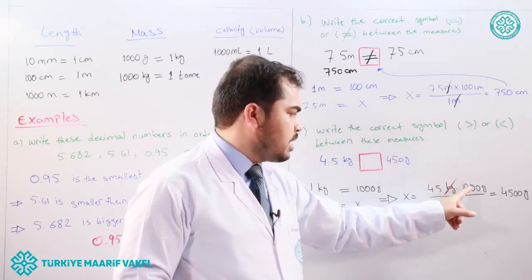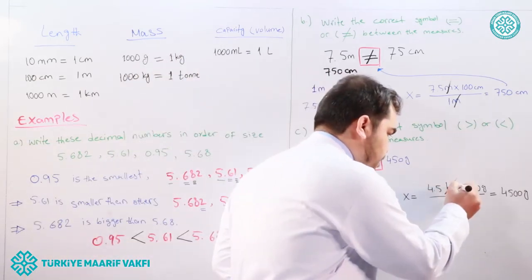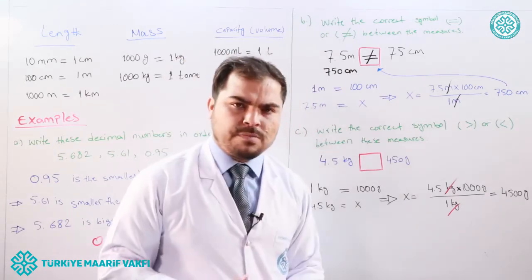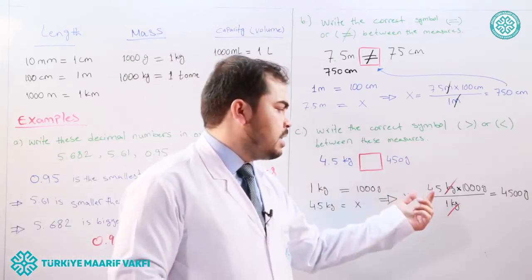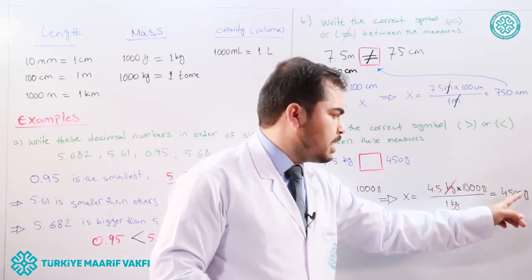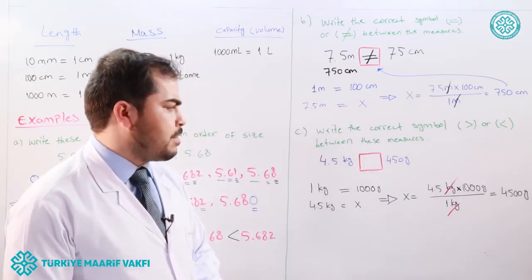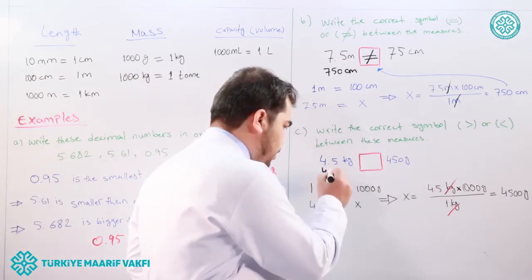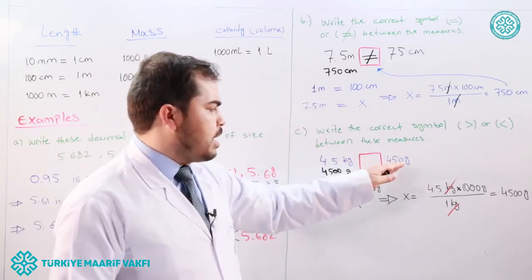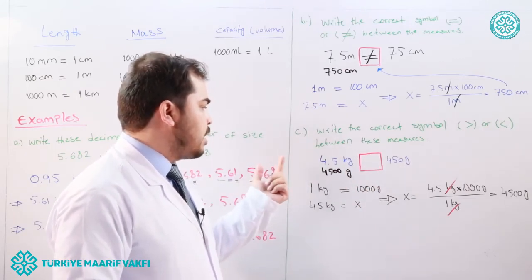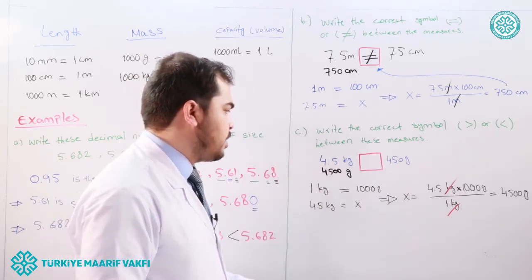x equals 4.5 kilograms times 1000 grams divided by 1 kilogram. Kilograms cancel, and 4.5 times 1000 equals 4500 grams. So 4.5 kilograms equals 4500 grams.